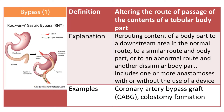The root operation bypass is defined as altering the route of passage of the contents of a tubular body part — you are simply diverting the path of the contents of a tubular body part. This root operation is used to code procedures performed for rerouting content of a body part to a downstream area in the normal route, to a similar route and body part, or to an abnormal route and another dissimilar body part. Bypass includes one or more anastomoses with or without the use of a device.